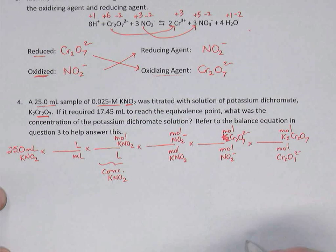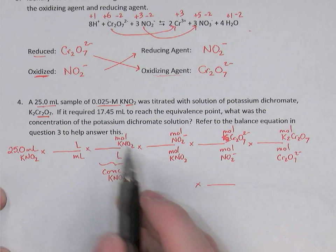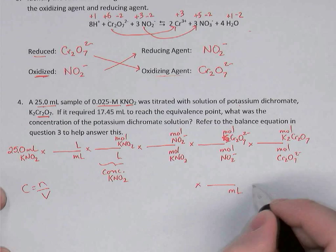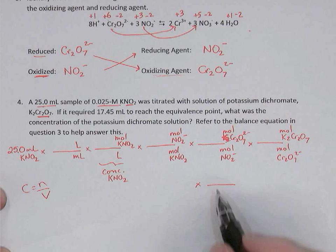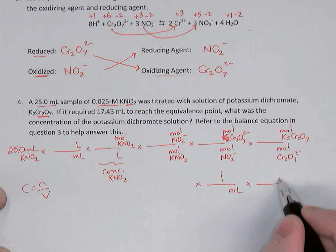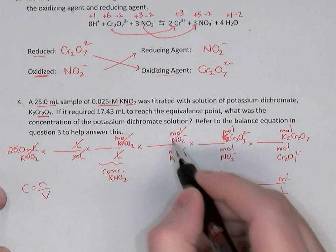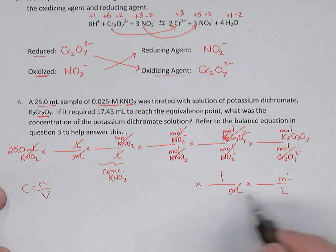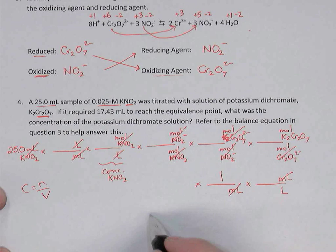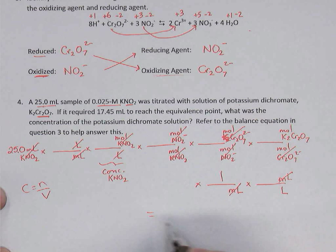To switch from moles to concentration, you divide by volume — remember C equals n over V. The volume was in milliliters, so I'll divide by that, then convert milliliters to liters to get molarity. The milliliters cancel, liters cancel, moles of KNO2 cancel, moles of nitrite cancel, moles of dichromate becomes moles of potassium dichromate, and milliliters cancel. What's left is moles of potassium dichromate per liter — the molarity of potassium dichromate.